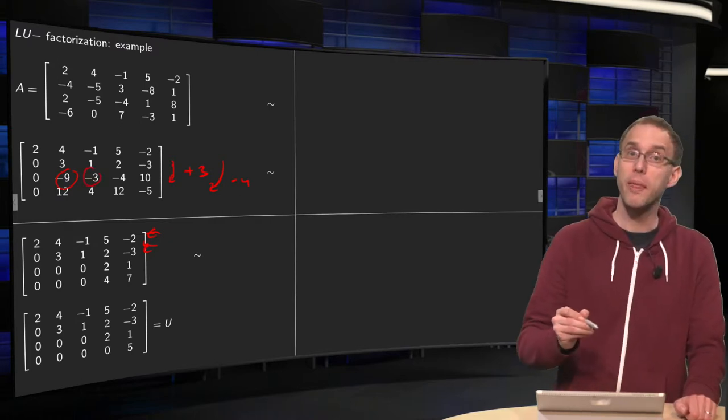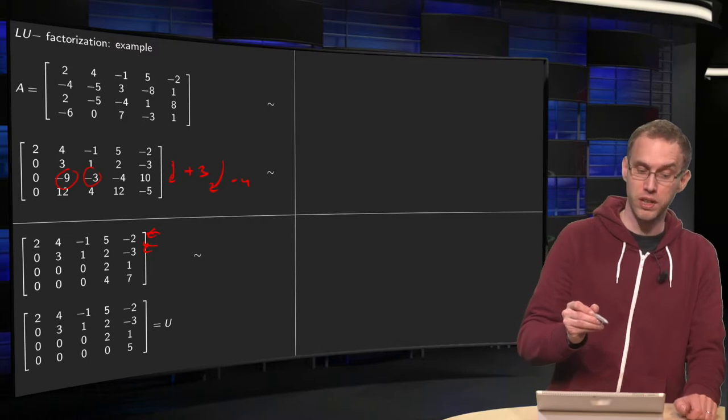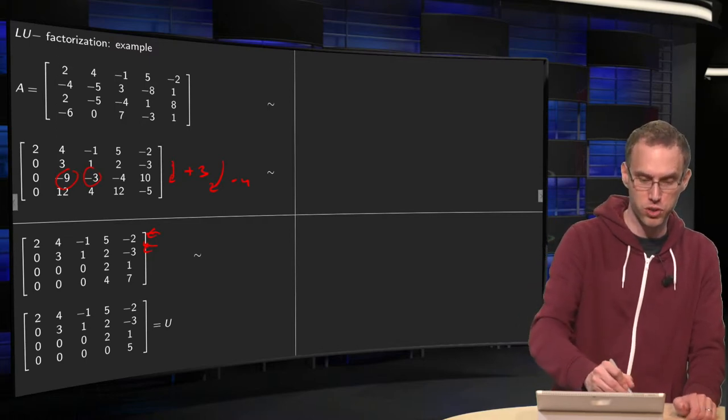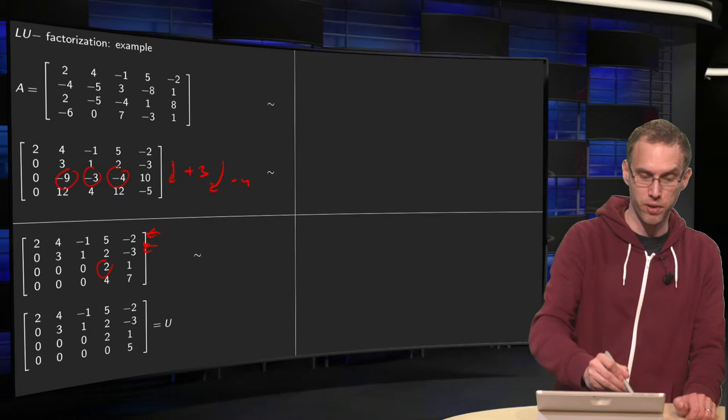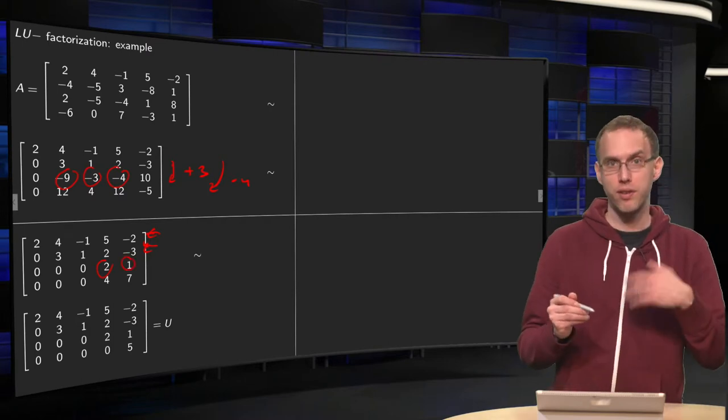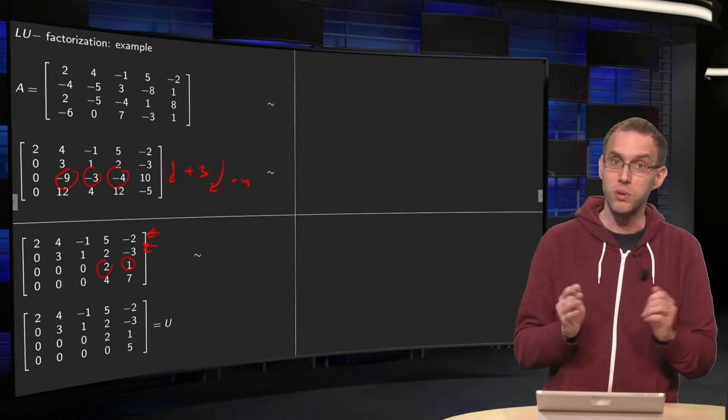We add 3 times 2, equals 6, to -4, which gives us a 2. This becomes a 2, as you see. And we add 3 times -3 to 10, which gives 10 minus 9 equals 1. The fourth row goes similarly. You can do that one yourself.